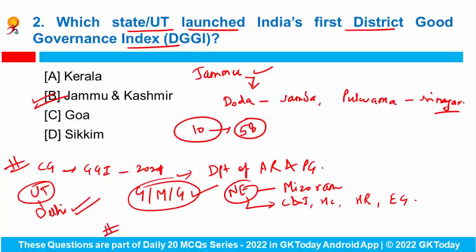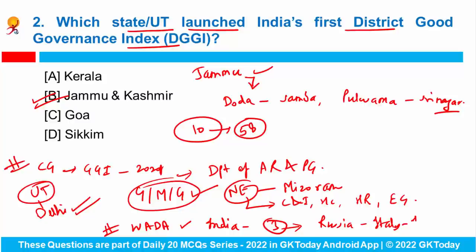According to the World Anti-Doping Agency, India is now among the top three of the world's biggest doping violators. The top five countries are: Russia, Italy, India, Brazil, and Iran — these are the countries that have violated the most.